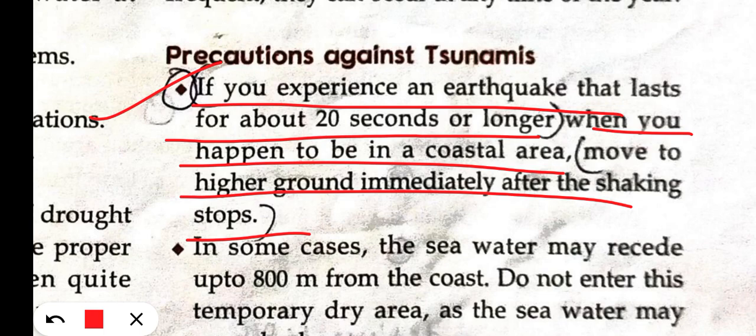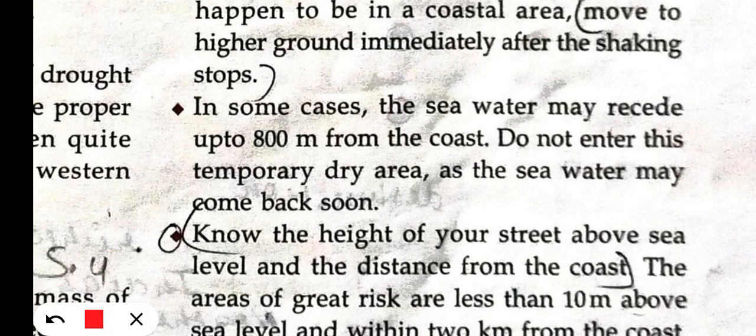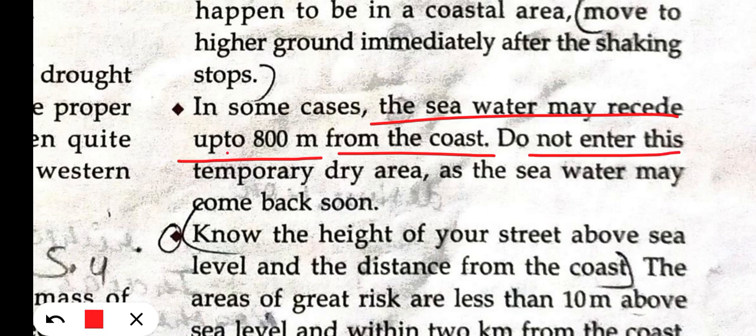If you are in a coastal area near the sea, the earthquake can affect the sea floor. In some cases, the sea waters can recede up to 800 meters from the coast. When you observe this — the sea water pulling back up to 800 meters — you should move to temporarily dry but elevated areas.